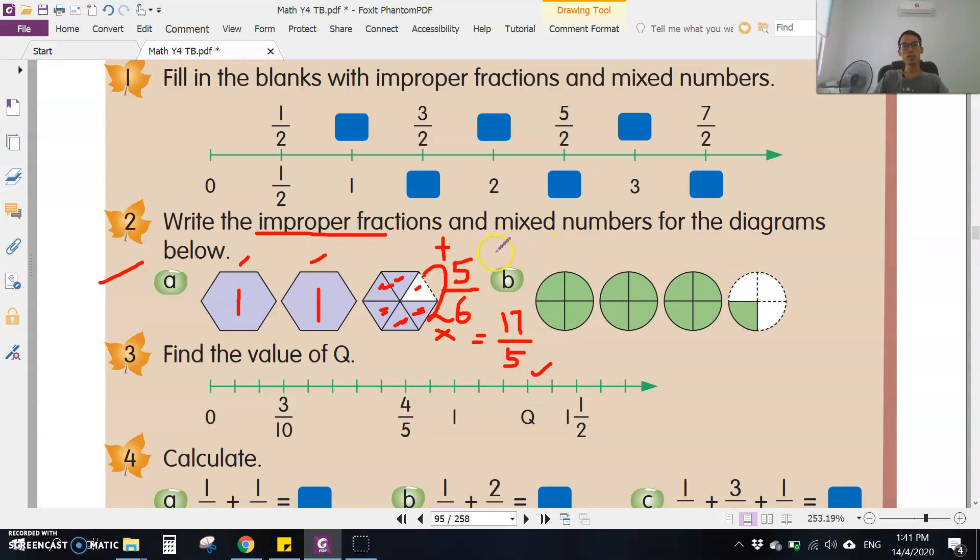Now look at b. Same thing here: 1, 1, 1 - three complete circles. This one has 4 parts and only one part is shaded. So the answer is 3 1/4. Change to improper fraction: multiply then add. 4 times 3 is 12, 12 plus 1 is 13, bottom remains 4. This is pecahan tak wajar, this is pecahan bercampur.